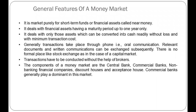In contrast to the capital market where the maturity period is more than one year, in the money market the maturity period is one year — you need to return the money within that specific time period. The money market deals only with assets that can be converted into cash readily, without loss or with minimum transaction costs. For example, if you have gold, you can easily sell it and convert that asset into money without any significant loss.